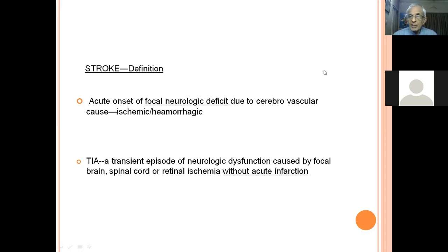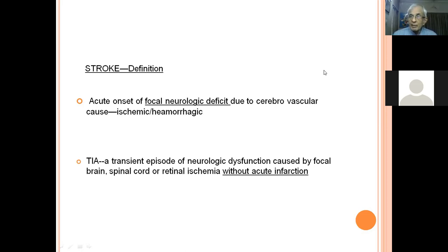A transient ischemic attack has all these criteria but is transient — focal hemiparesis, focal speech involvement, or focal cerebellar involvement of a transient nature. When imaging is done, it usually does not show any structural cause because it is a physiological dysfunction.